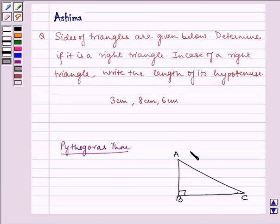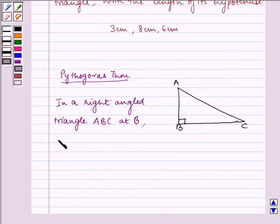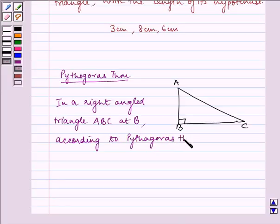Now let us consider this triangle ABC. So we write here, in a right angled triangle ABC at B, according to Pythagoras theorem,